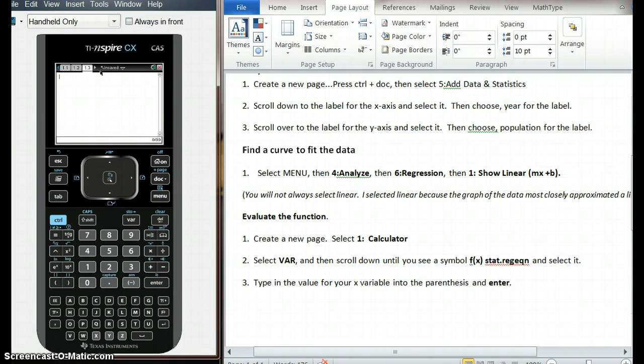Now I want to use the equation that I just used for the regression. I'm going to go to VAR, variables, and find the statistical regression equation, which is right there. Notice it says f of x, so it indicates it's a function. Using that regression, I'm going to type in 2010 and press enter. So that is the population in millions that we would predict using this data.